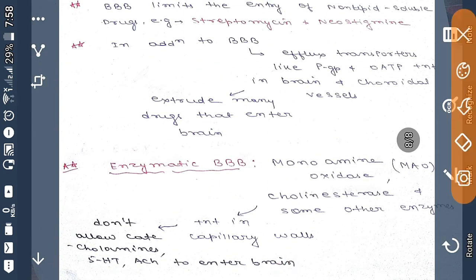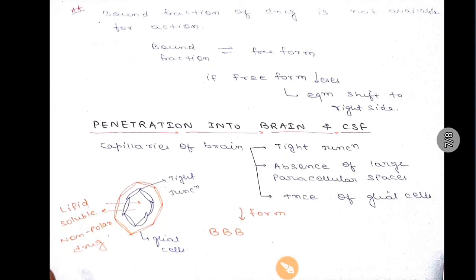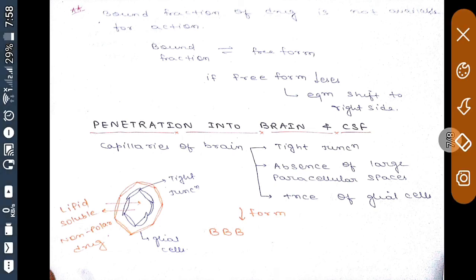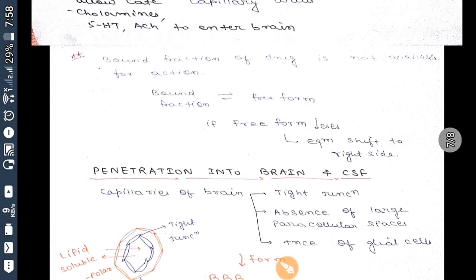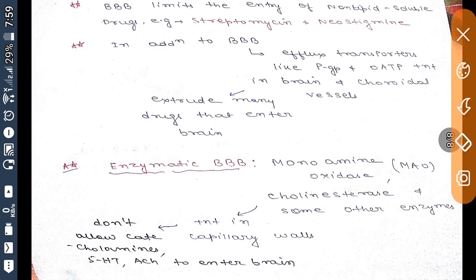This blood-brain barrier limits the entry of non-lipid-soluble drugs. Lipid-soluble drugs will easily pass through the barrier, but non-polar drugs will not pass through the blood-brain barrier. So blood-brain barrier limits the entry of non-lipid-soluble drugs such as streptomycin and neostigmine.